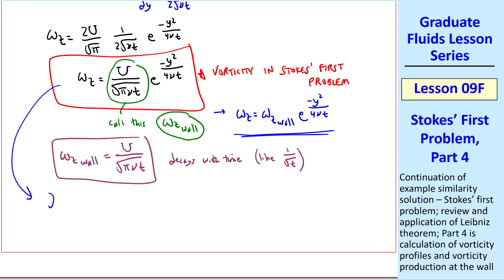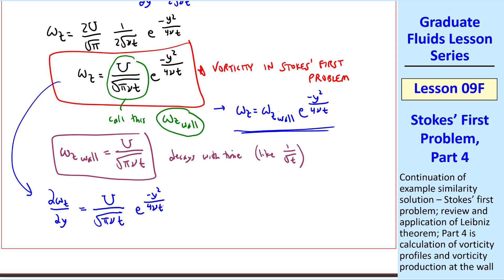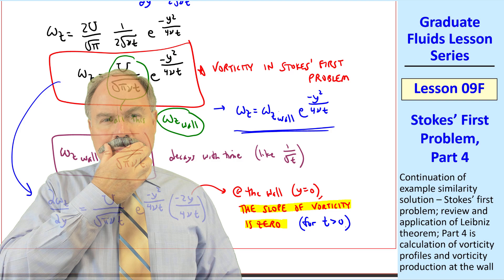My other comment is that del omega z del y, taking the derivative, is U over square root of pi nu t, e to the negative y squared over 4 nu t, times the derivative of that exponent, negative 2y over 4 nu t. And I point out that at the wall, where y equals zero, the slope of vorticity is zero. At the wall for all time greater than zero.